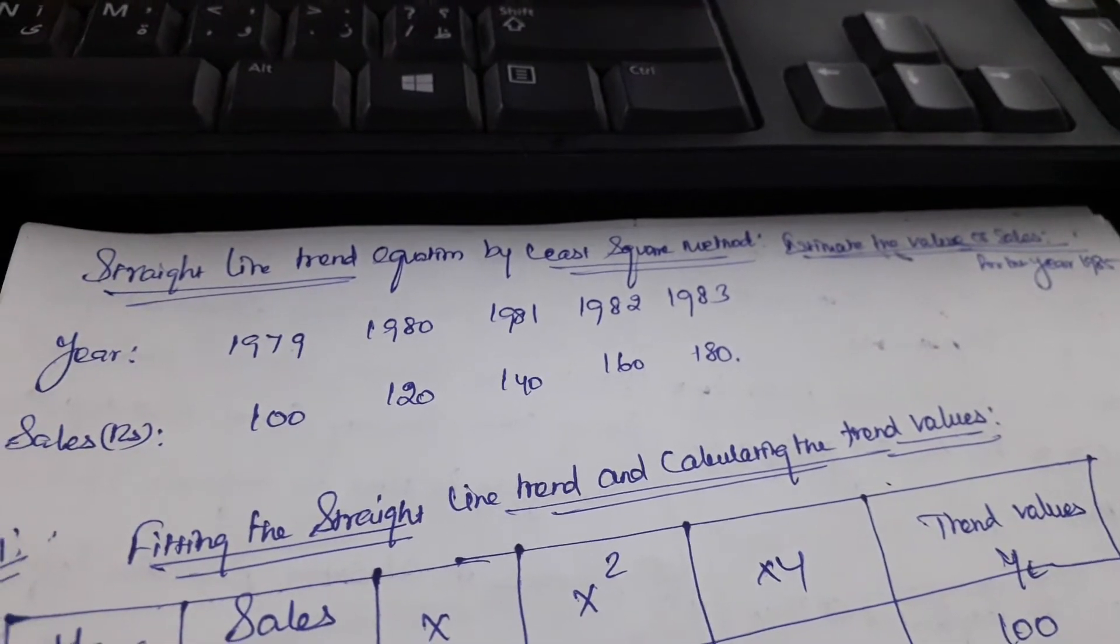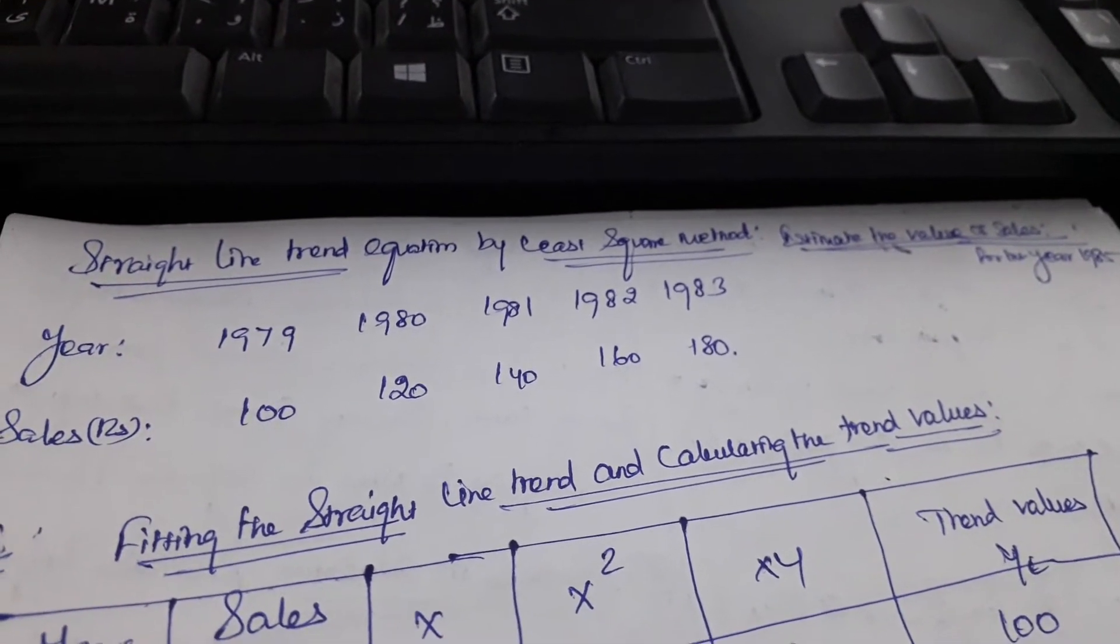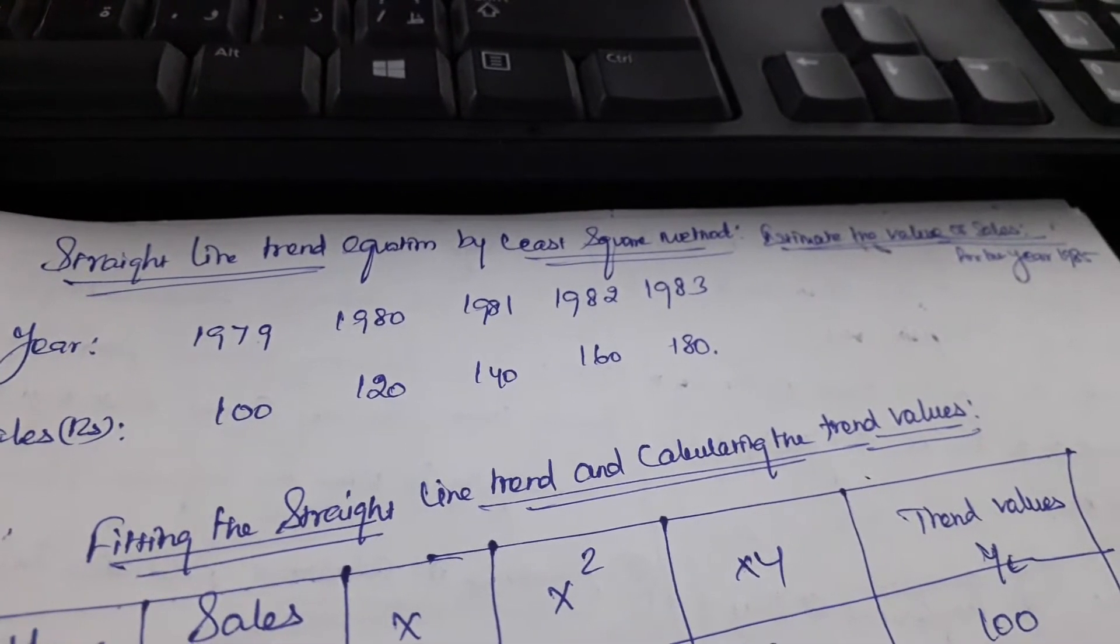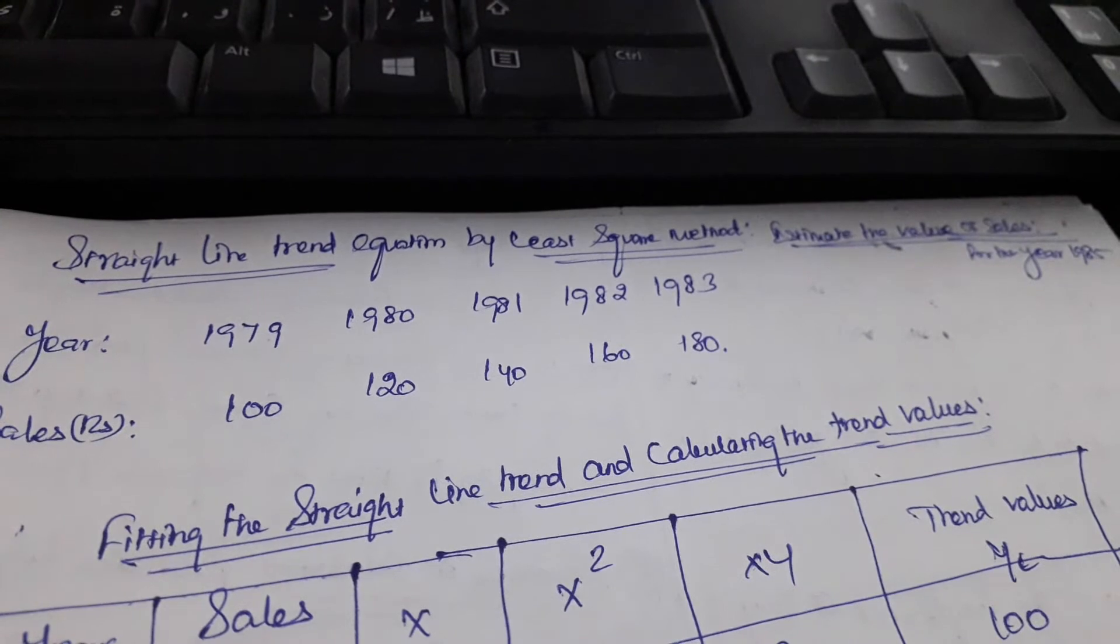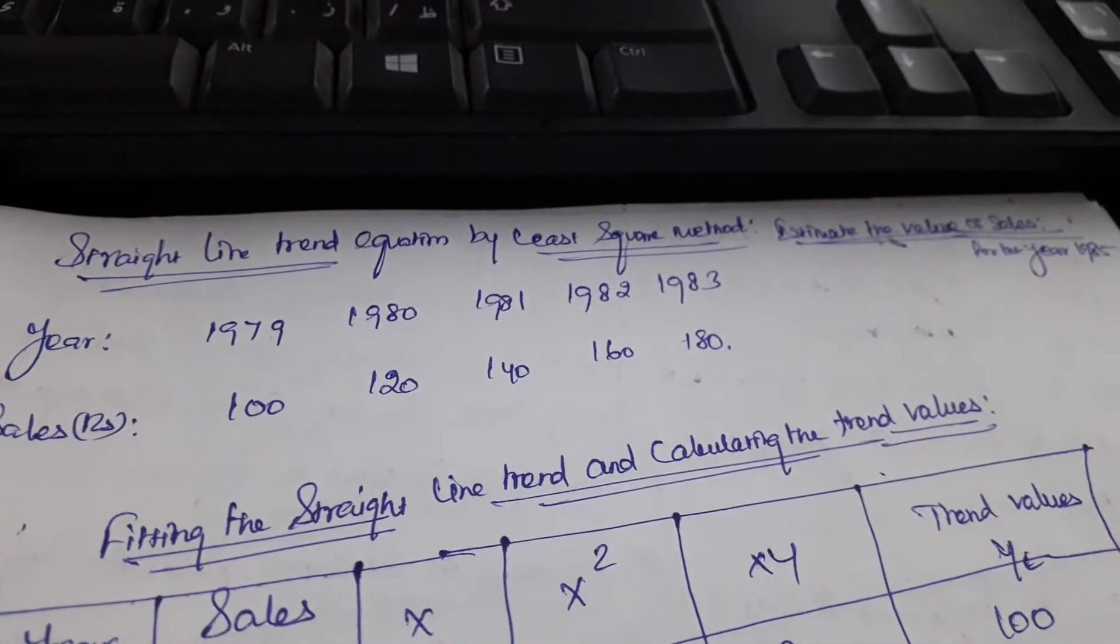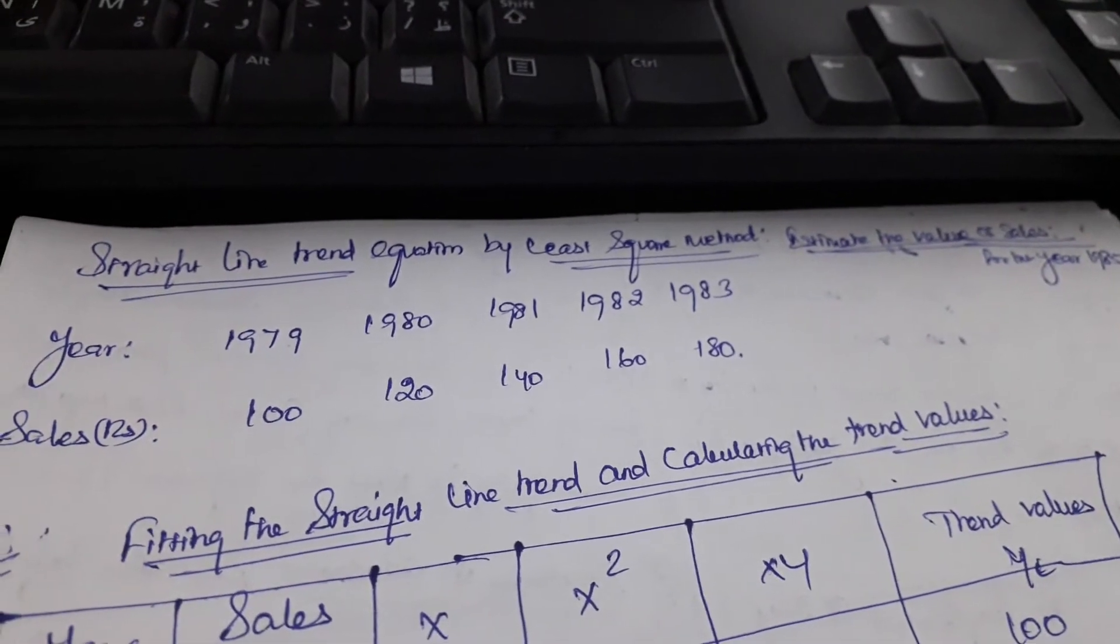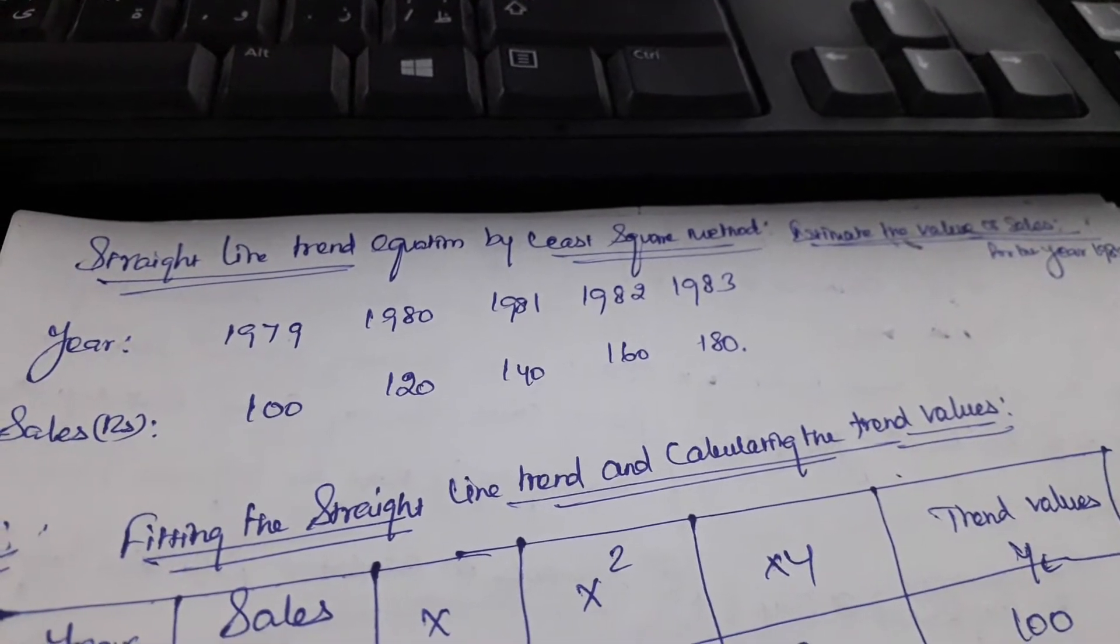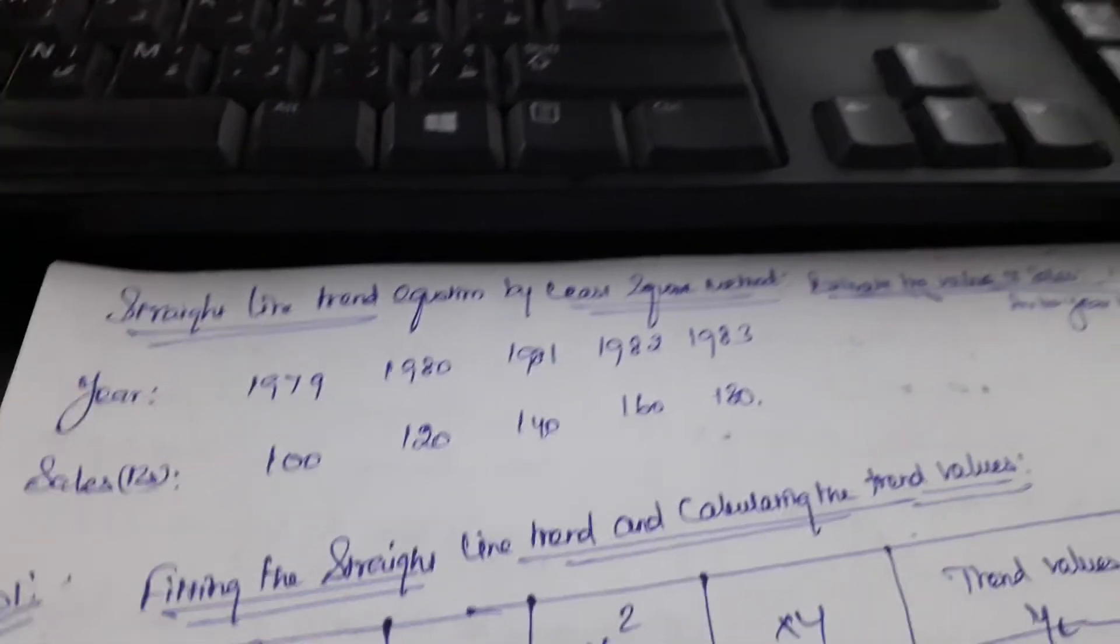The trend equation is a simple regression where the X variable is the time variable. It is used to determine the trend in the variable Y.